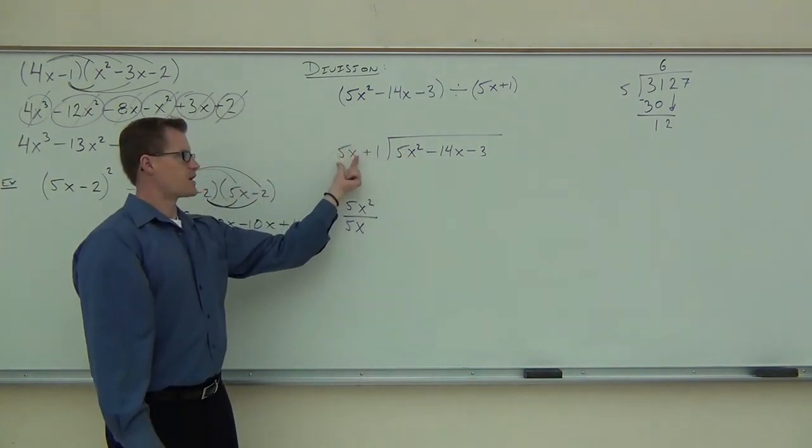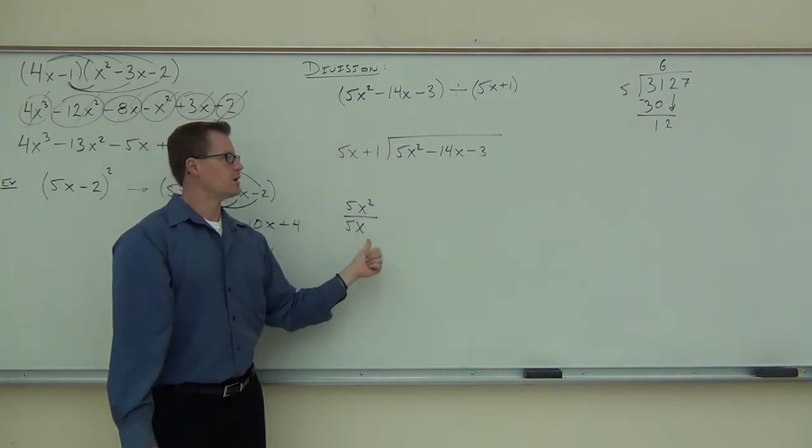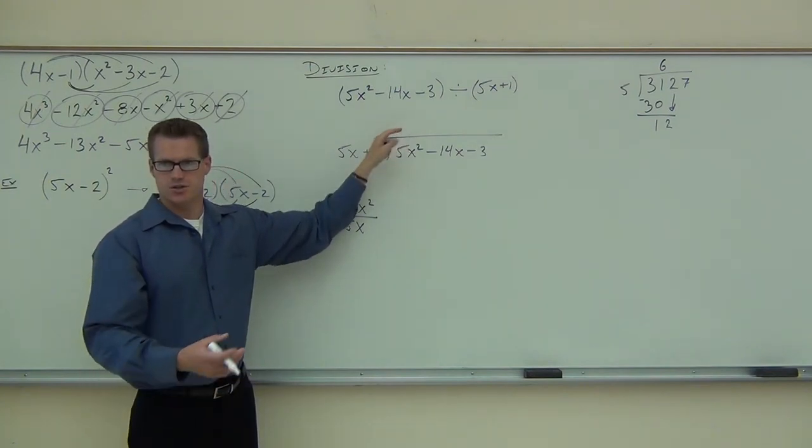What I want you to do, write this first term and divide it by this first term. 5x² divided by 5x. This first term divided by this first term. Whatever you get here is going to go right there. Are you with me on this? You're dividing. You're just doing it term by term.